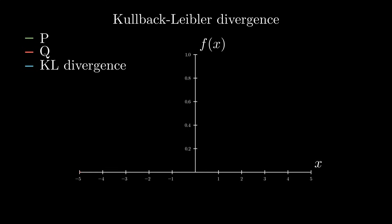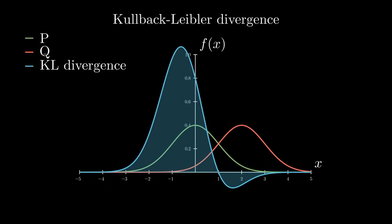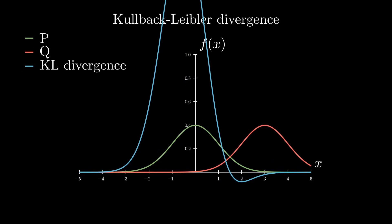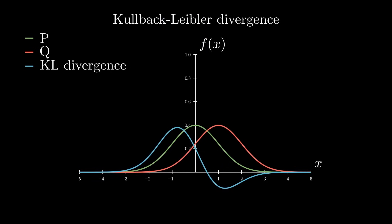For instance, let's take these two Gaussians. The Kullback-Leibler divergence between these two functions is the blue area under the blue curve. As these Gaussians move further apart, the KL divergence increases, and as they move closer together, the KL decreases. Finally, if the two functions match perfectly, the KL is zero.